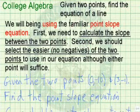Given two points, we want to find the equation of a line. We will be using the familiar point-slope equation. First, we need to calculate the slope between the two points. Secondly, we should select the easier point, I prefer the ones without negatives, of the two points to use in our equation, although either one of the points will in fact suffice.